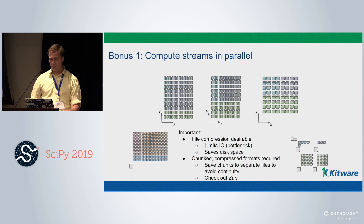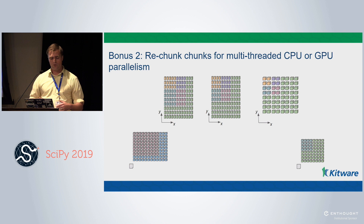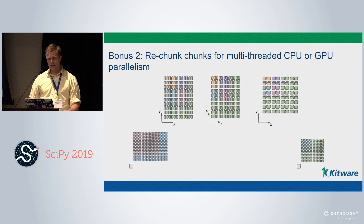Another option for parallel computing is multi-threaded CPU or GPU parallelism. In this framework, when we do the chunking, we re-chunk it again — when processing the output for one of these filters, we split it up and run that on a thread on the CPU or GPU to compute it.